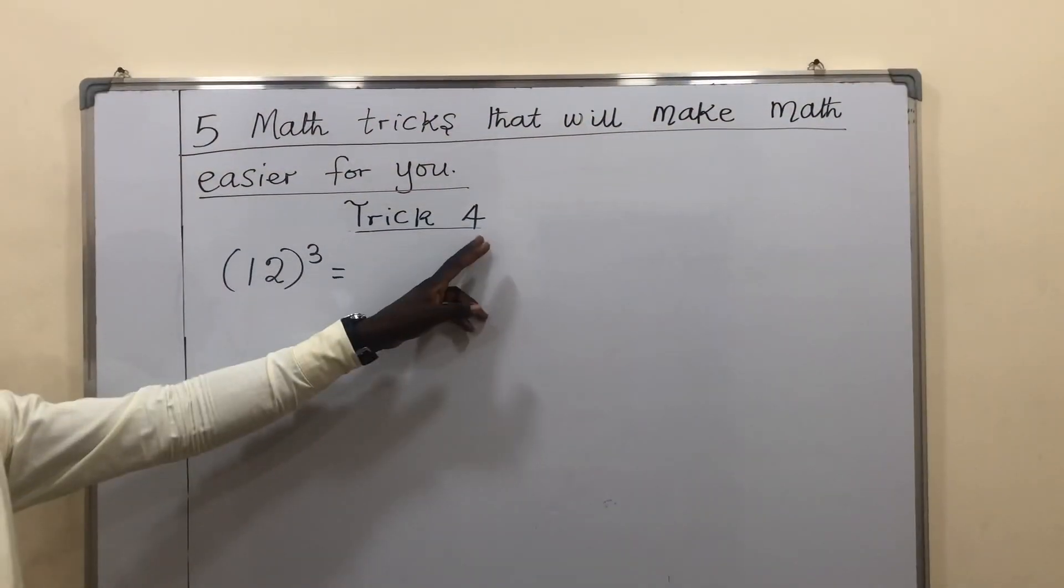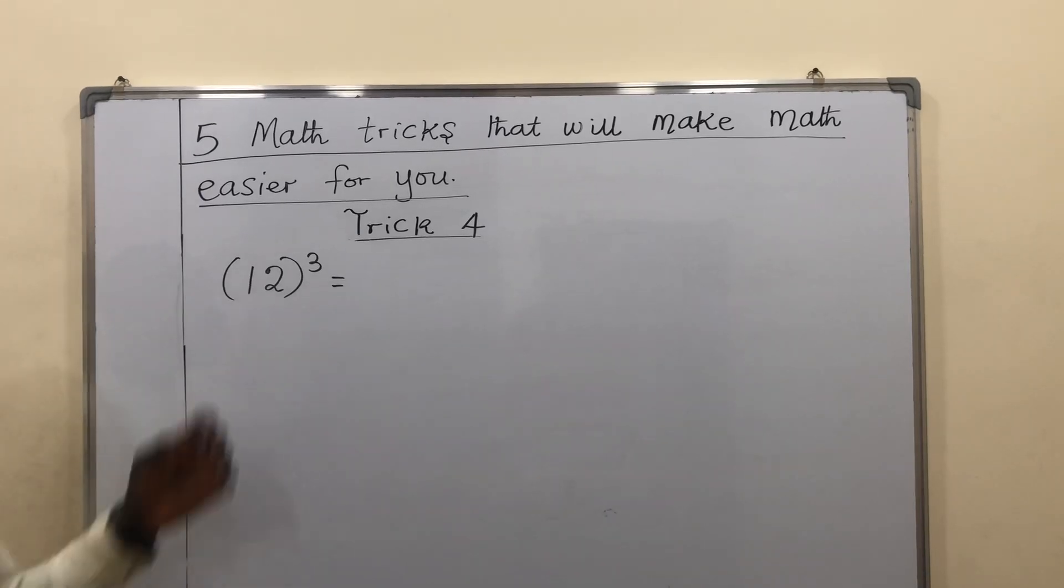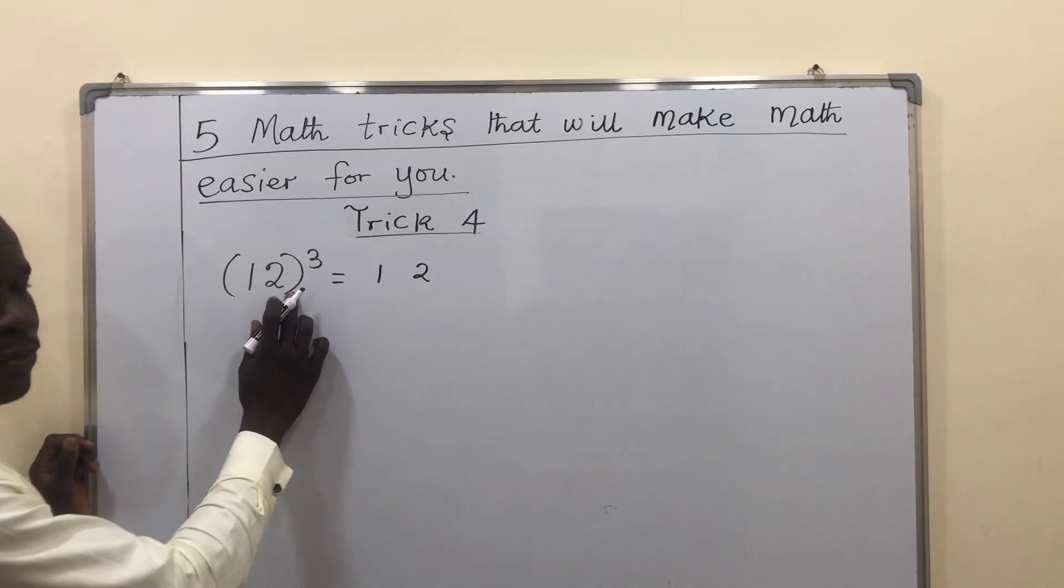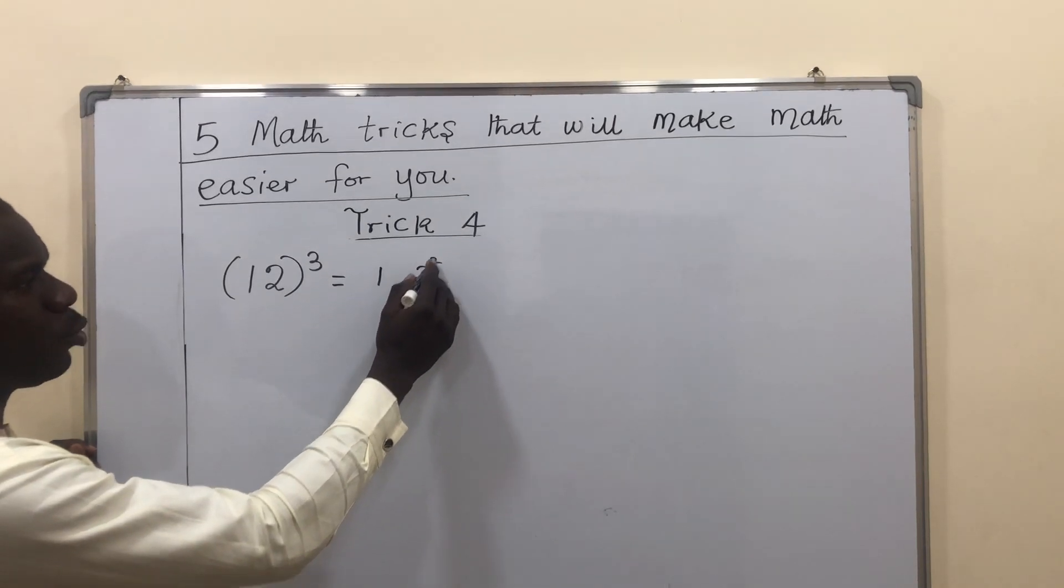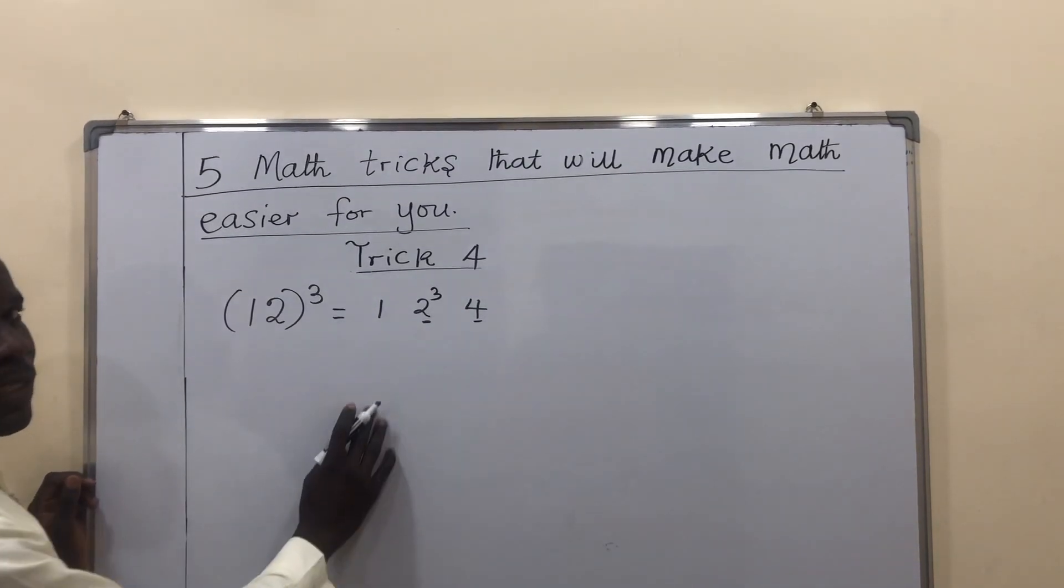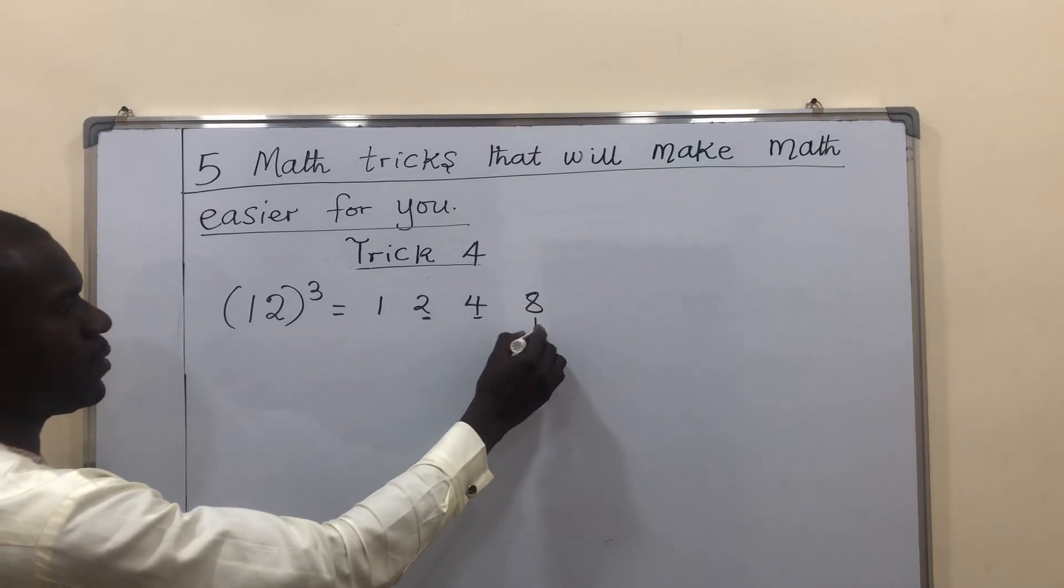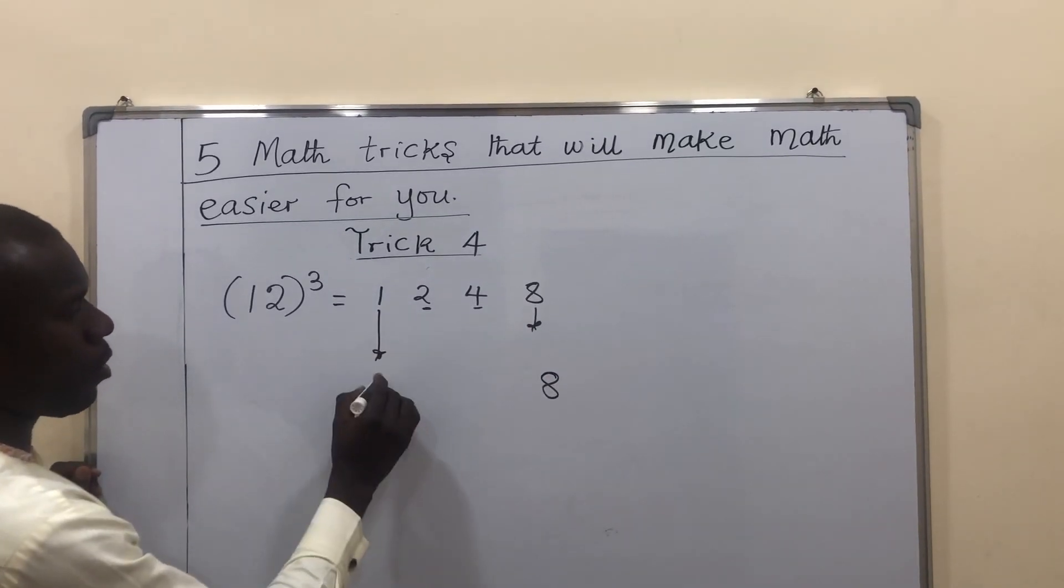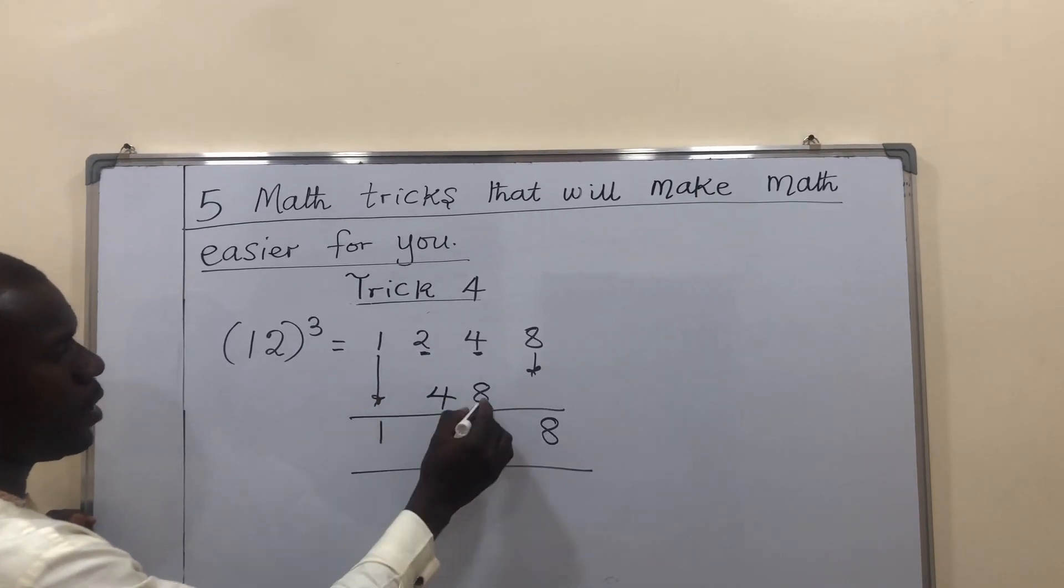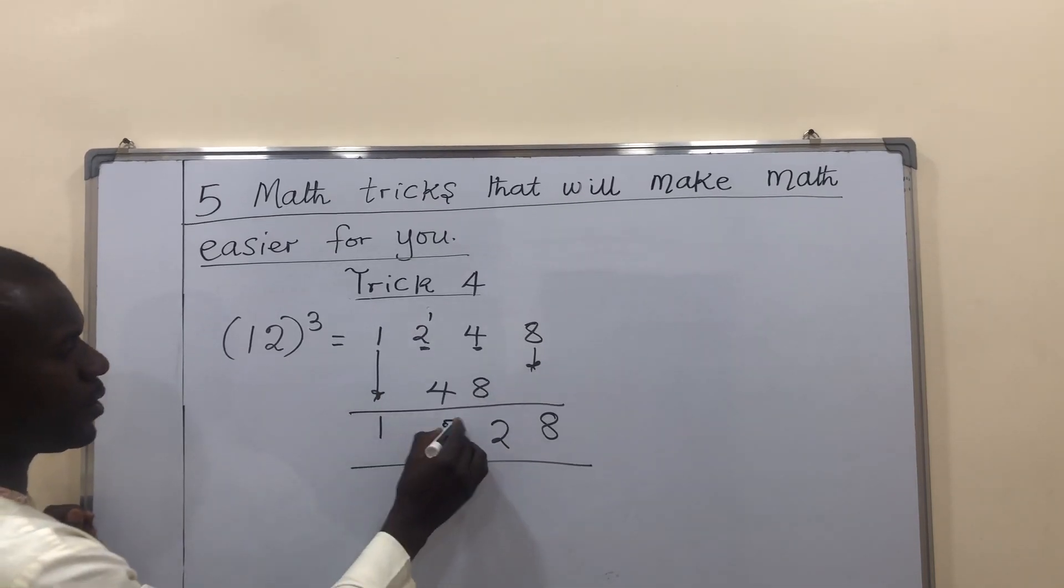For trick 4, it has to do with cube of any number. If they ask you to find the cube of any number, like what we have here, just bring down the digits in the brackets. So, we have 1 and 2. Now, for the second digit, square it. 2 squared means 2 times 2, which is 4. You get the top digit. To get the last digit, find the cube of the same digit. 2 times 2 times 2 will give me 8. That is all. Then bring down this 8. Bring down this 1. Then double 4 is 8. Double 2 is 4. 8 plus 4, 12. 2, put down 1 here. 4 plus 2, 6 plus 1, 7. We have our answer.